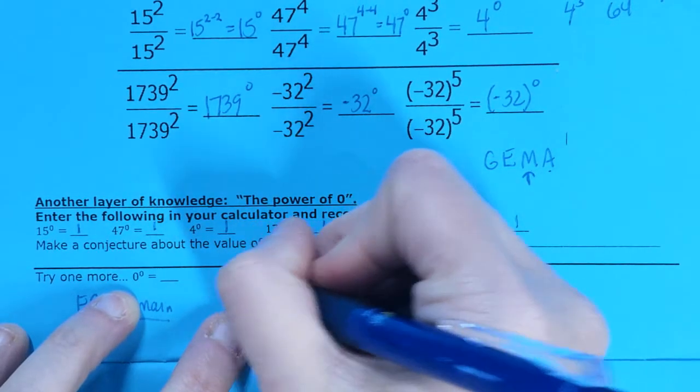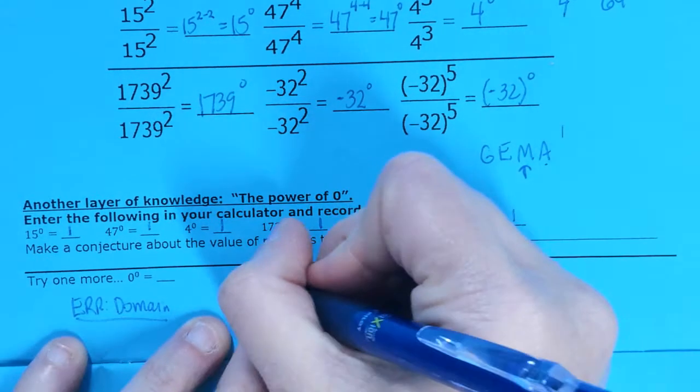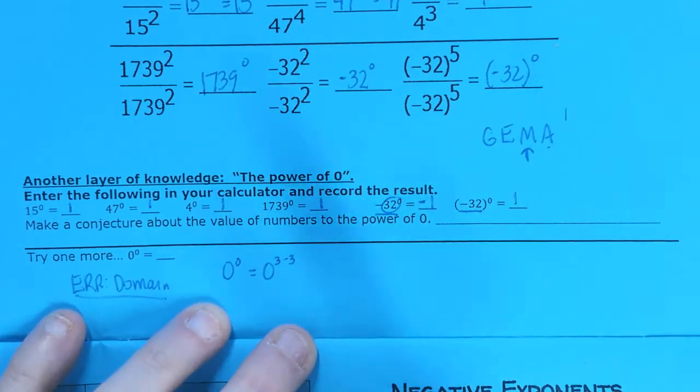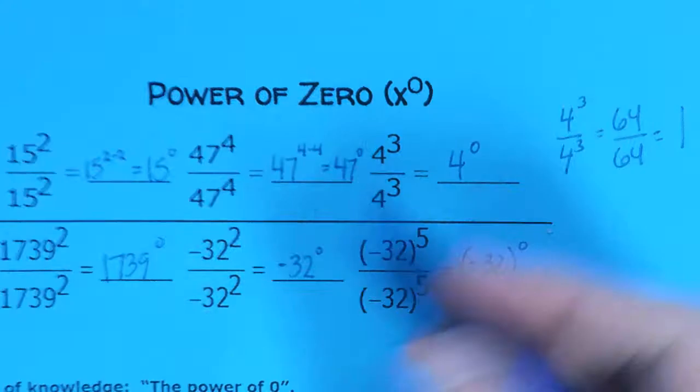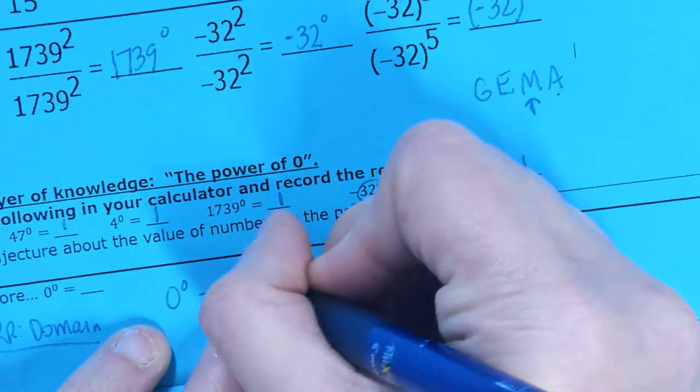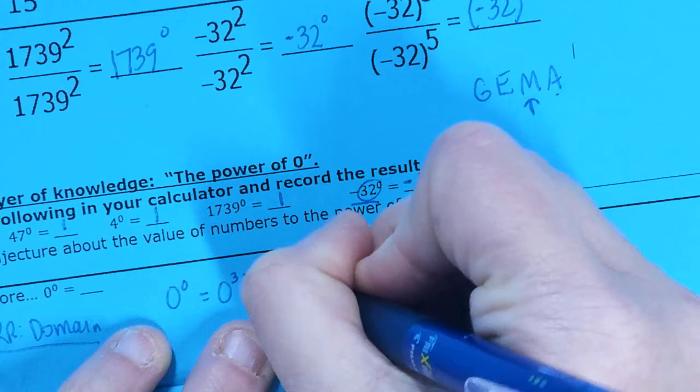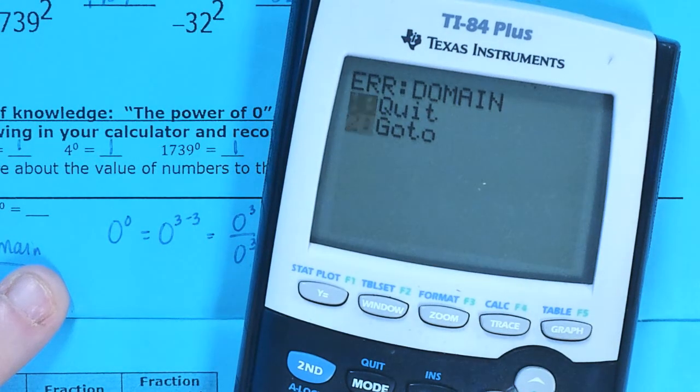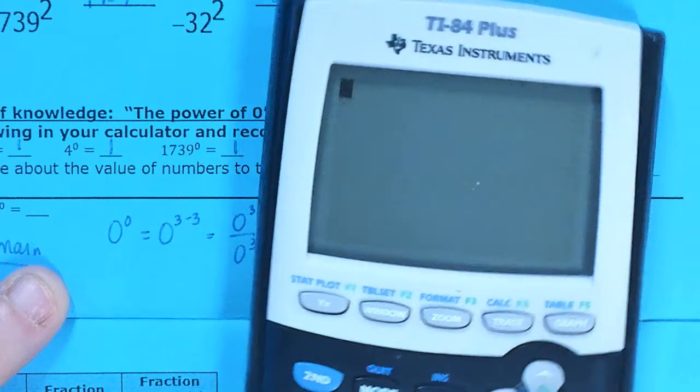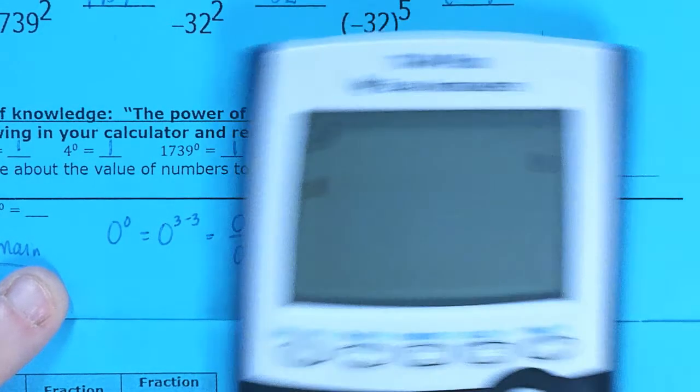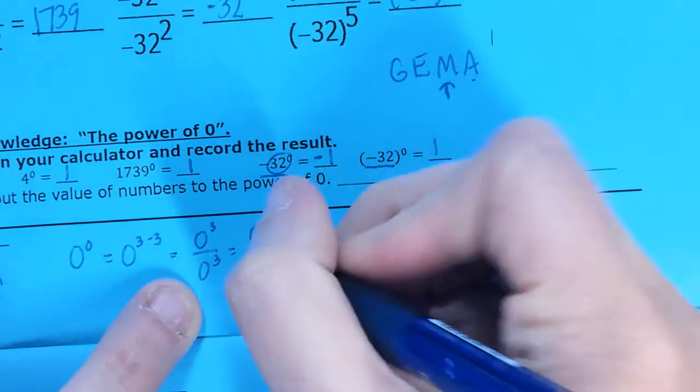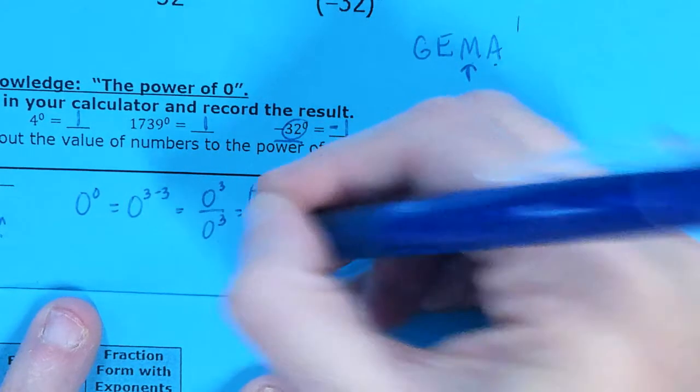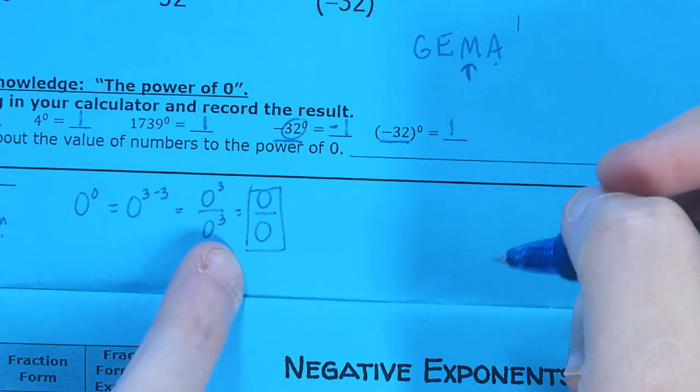0 to the 0 power means that I took something and subtracted itself. So let's pretend that I could say 0 to the 3 minus 3. Would that give me 0? 3 minus 3 is 0. So that's going to give me 0. Well, if I rewrote this as a division problem, I could say 0 to the 3 divided by 0 to the 3. Just like we had up here. So let's actually work this out and see what we get. 0 to the 3rd power is 0. And 0 to the 3rd power is 0. Well, this is the problem right here. This right here is the reason we're getting that error domain.